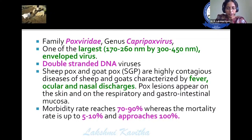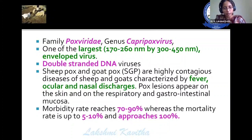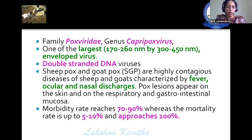By definition, this disease is a highly contagious disease of sheep and goats characterized by ocular and nasal discharges and the formation of pox lesions on the skin, respiratory, as well as the gastrointestinal mucosa. The morbidity rates reach up to 70 to 90 percent, whereas the mortality rates are up to 5 to 10 percent and may even go up to 100 percent.